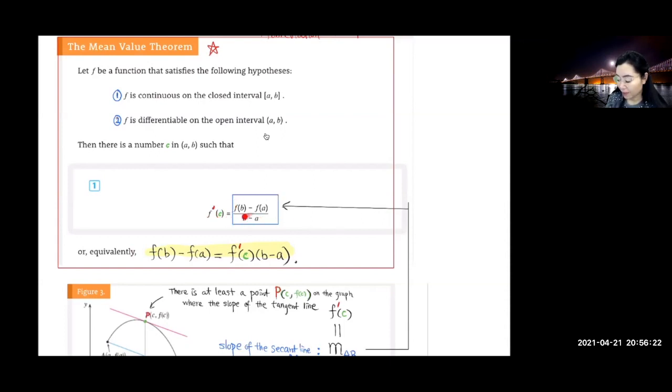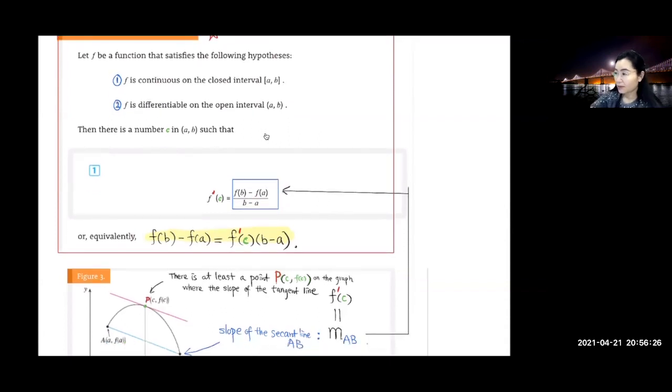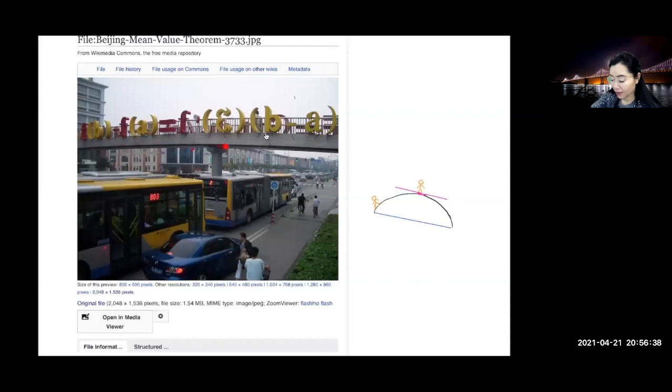If we multiply both sides by b minus a, we got this equation, which is the same equation you see here on this bridge.